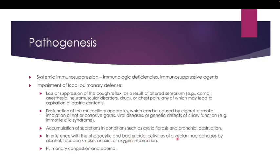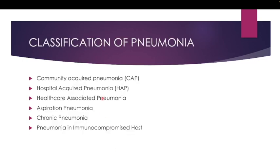Interference with the phagocytic and bactericidal activities of alveolar macrophages — caused by alcohol, tobacco smoke, anoxia (low oxygen), or oxygen intoxication — can also lead to pneumonia. Pulmonary congestion and pulmonary edema may likewise lead to pneumonia, as a lot of mucus within the respiratory tract is a breeding ground for bacteria and viruses, making it easier for them to proliferate and cause infection.